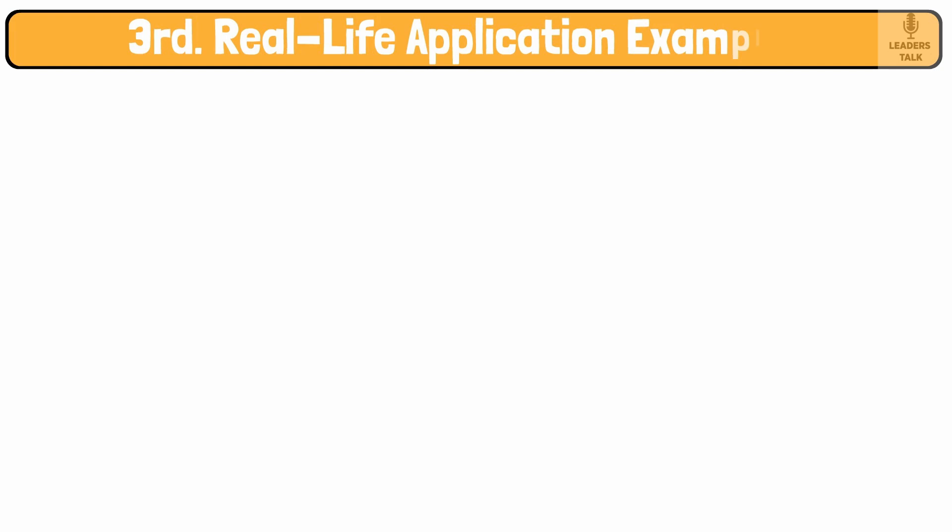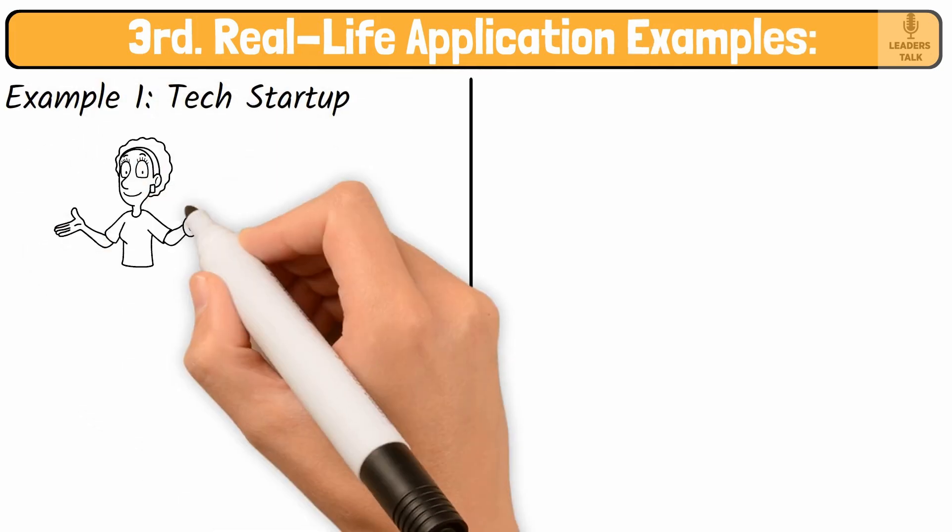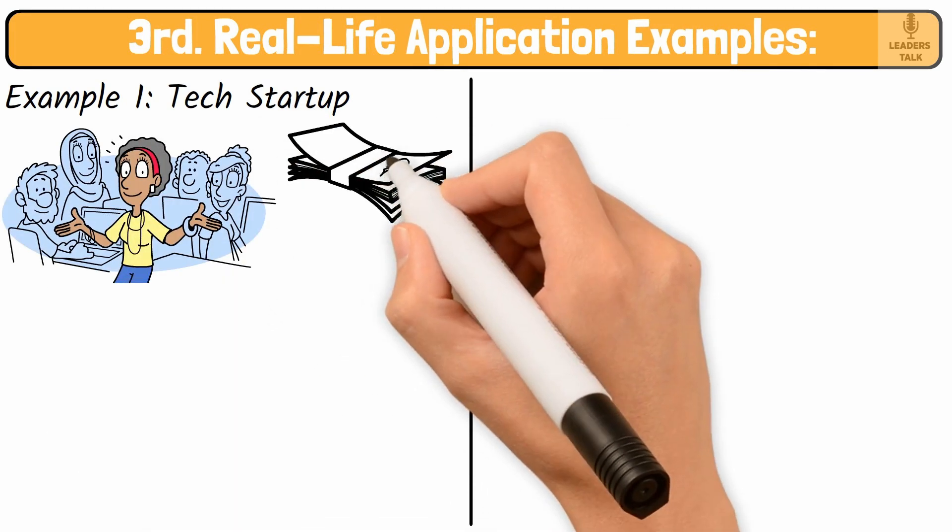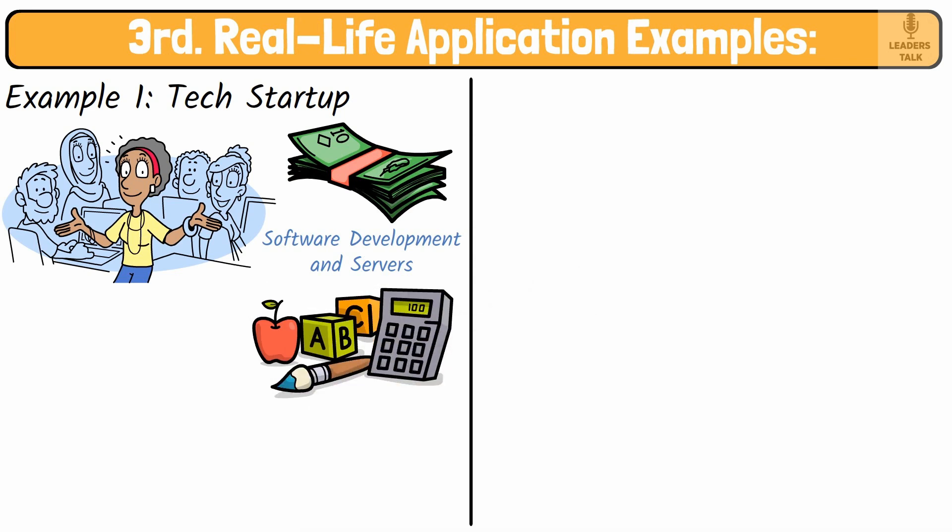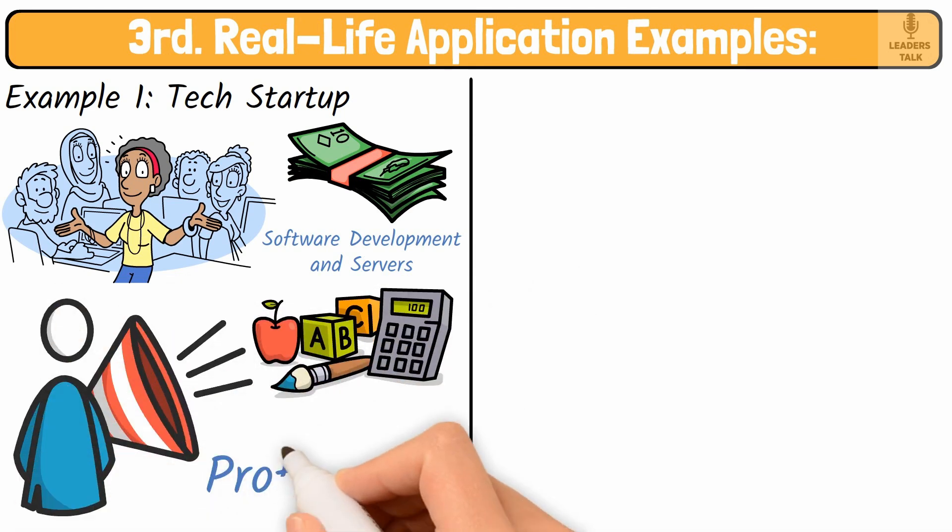Real-life application examples. Example 1: Tech startup. A SaaS (software-as-a-service) company incurs high fixed costs for software development in servers. By calculating the breakeven point, they know how many subscriptions they need to sell to cover their initial investment and move towards profitability.